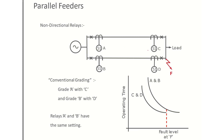We have already discussed why definite time is not used and we use IDMT. For IDMT, we have also discussed that relays C and D should have the lower operating time for the fault at F, and relays A and B should have higher operating time for the same fault at F. That means if C and D have this type of characteristic, then A and B will have the same characteristic but with some coordination time interval.